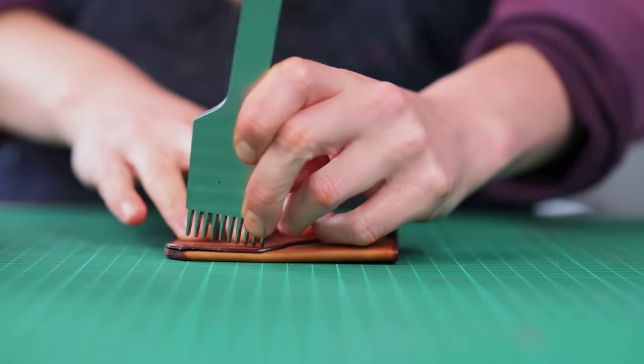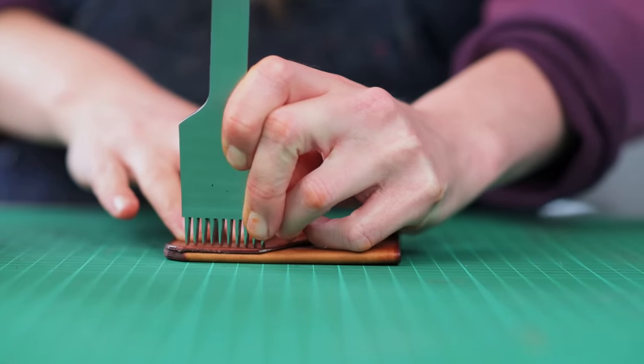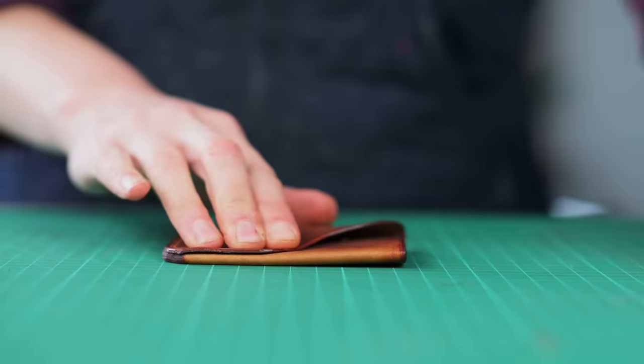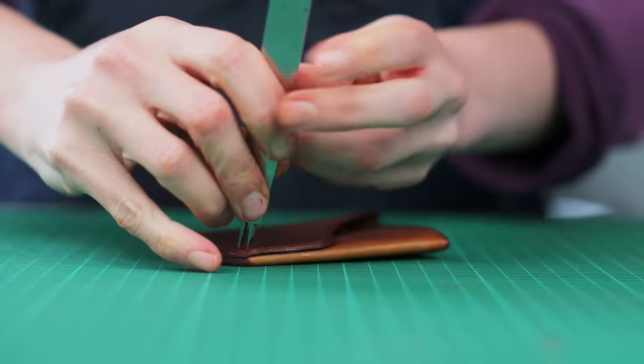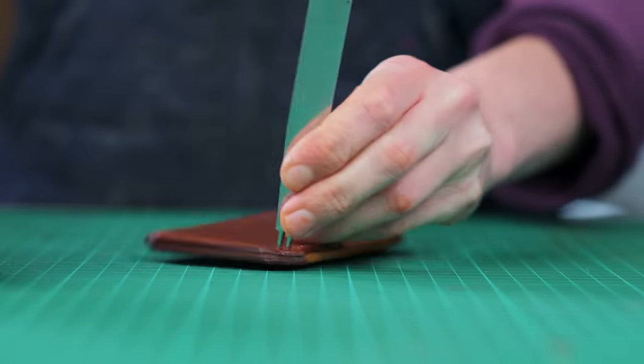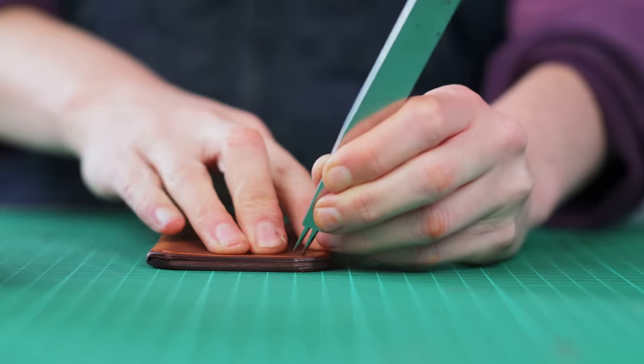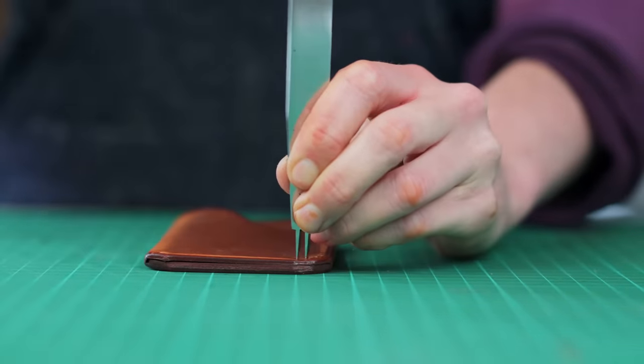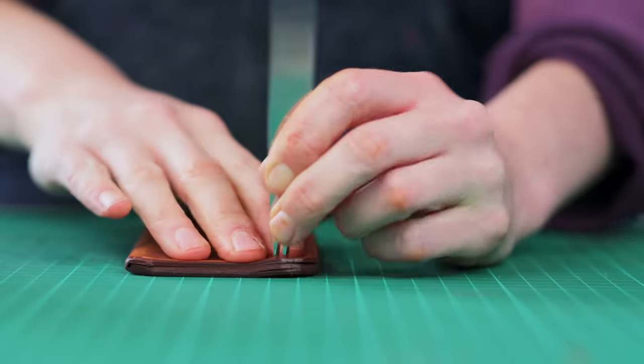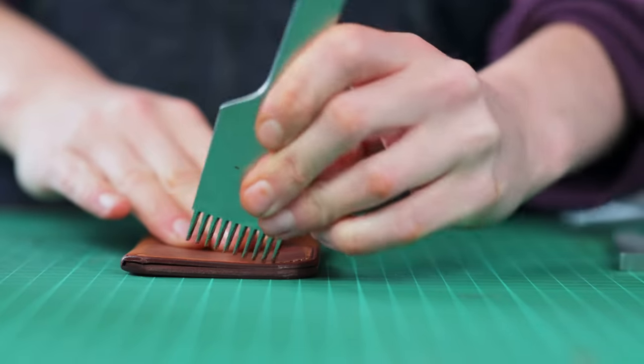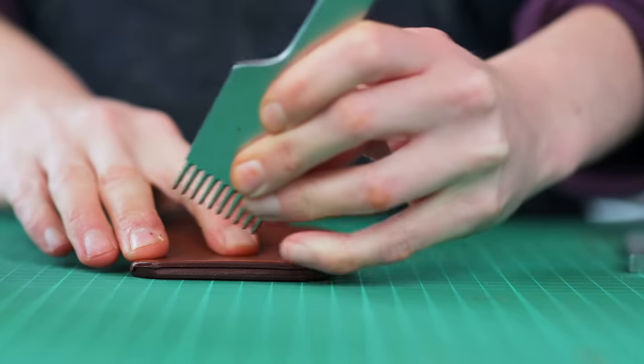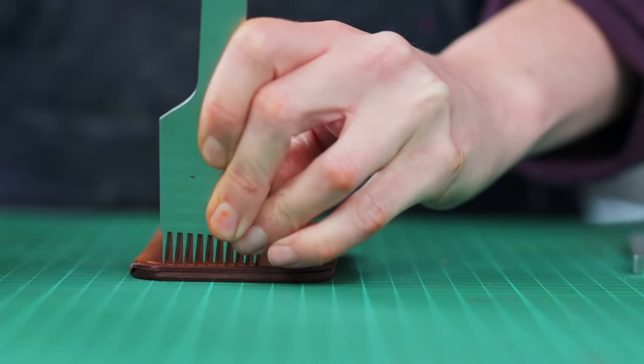And then we can stitch mark. So I am using 3.38 stitching irons and then we're just going to stitch mark along that line.